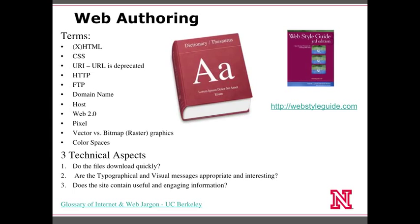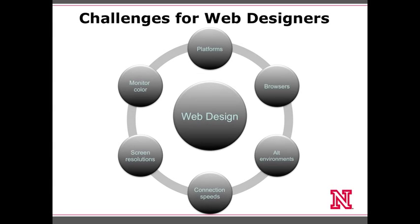Pixels create bitmapped or raster graphics, as opposed to vector graphics. The two main color spaces we're working with in this class are CMYK and RGB. Technical aspects to think about when working on the web: Do files download quickly? Are the typographical and visual messages appropriate and interesting? Does the website contain useful and engaging information? These are questions every web developer needs to be asking themselves.